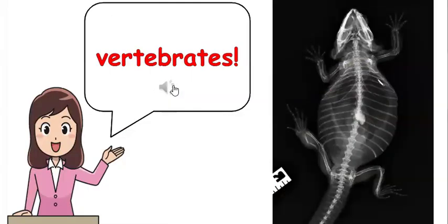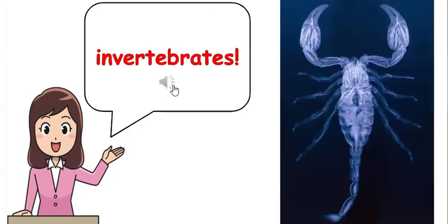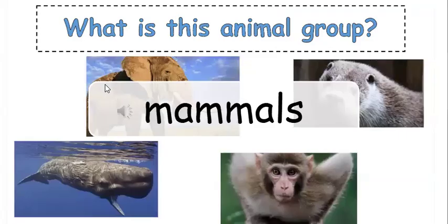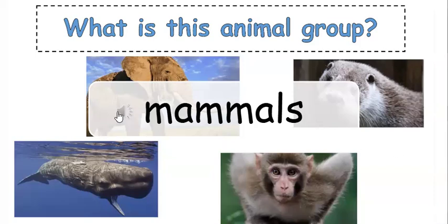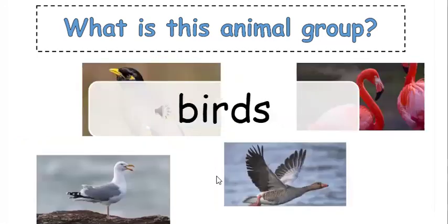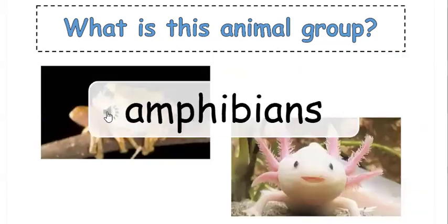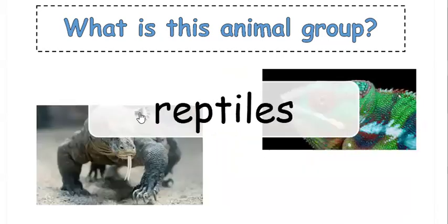Vertebrates. Invertebrates. We reviewed the different animal groups. What is this animal group? Mammals. Birds. Fish. Amphibians. Reptiles.